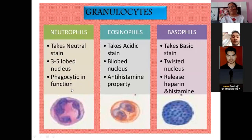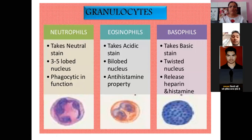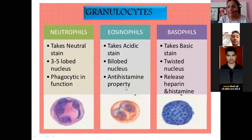Neutrophils are phagocytic in function — they engulf foreign particles and destroy them by phagocytosis. Eosinophils take acidic stain and have a bi-lobed nucleus. They have anti-histamine properties and are anti-allergic cells.